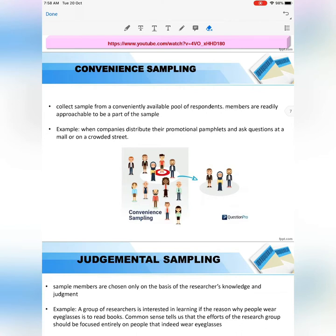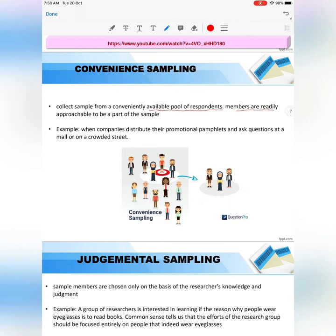Convenience sampling collects samples from a conveniently available pool of respondents, and members are readily approachable to be part of the sample. The keyword here is 'available pool of respondents and members are readily approachable.' For example, when companies distribute their promotional pamphlets and ask questions at the mall or on crowded streets — you go to crowded places because there you can choose any sample to be your respondent.